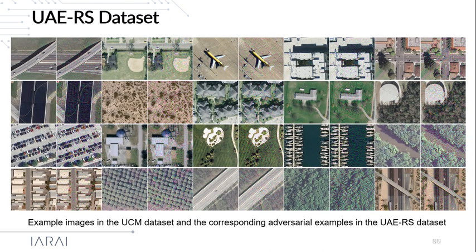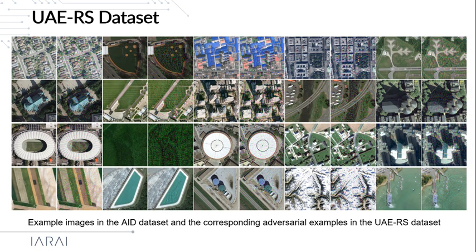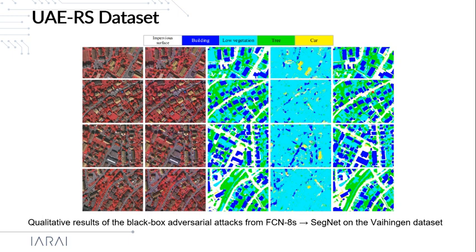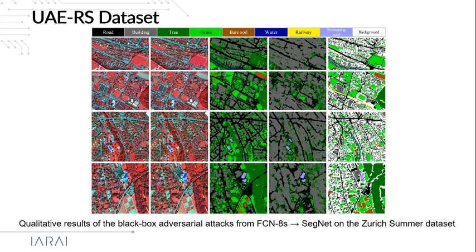These are example images in the UCM dataset and corresponding adversarial examples in the UAERS dataset. The adversarial examples are very similar to the original clean images for human observers. These are examples in the AID dataset and corresponding adversarial images in the UAERS dataset. For semantic segmentation tasks, we also provide qualitative results of the adversarial attack from the FCN model to SegNet. These are results on the Vaihingen dataset: the first column shows original clean images, and the second column shows corresponding adversarial examples. Although they look very similar, the SegNet model is seriously deceived, as observed in the fourth column. Similar phenomena can be observed on the Zurich Summer dataset.